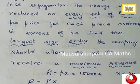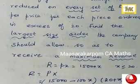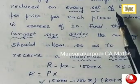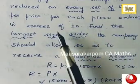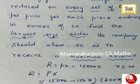When x is greater than 20, let us denote p by capital P and x by capital X. Then price is equal to 15,000 minus 100x. The charge is reduced on every set of rupees 100 per price for each piece ordered in excess.